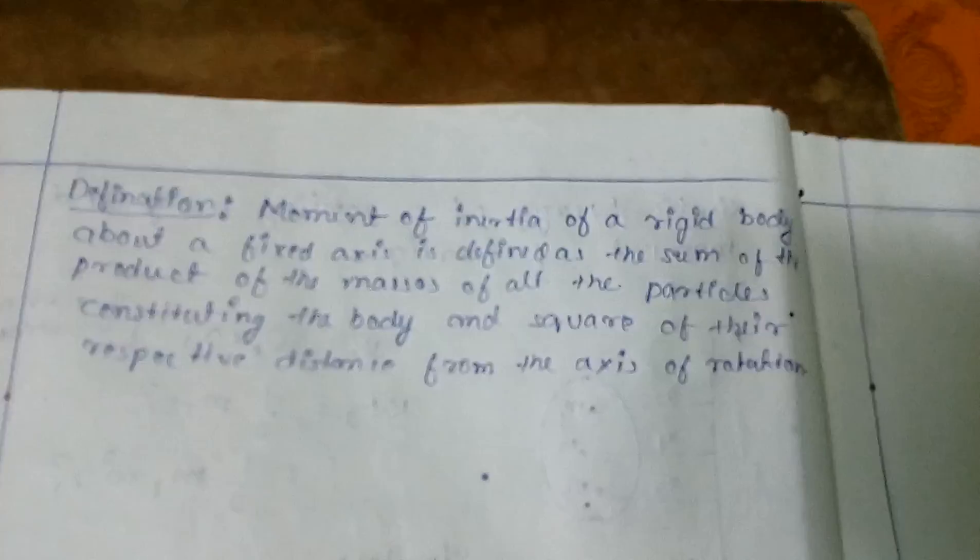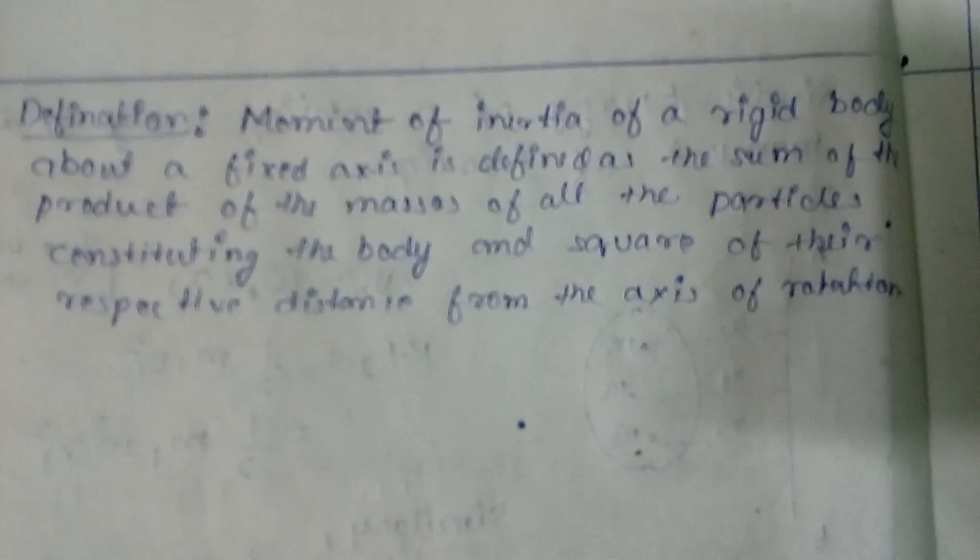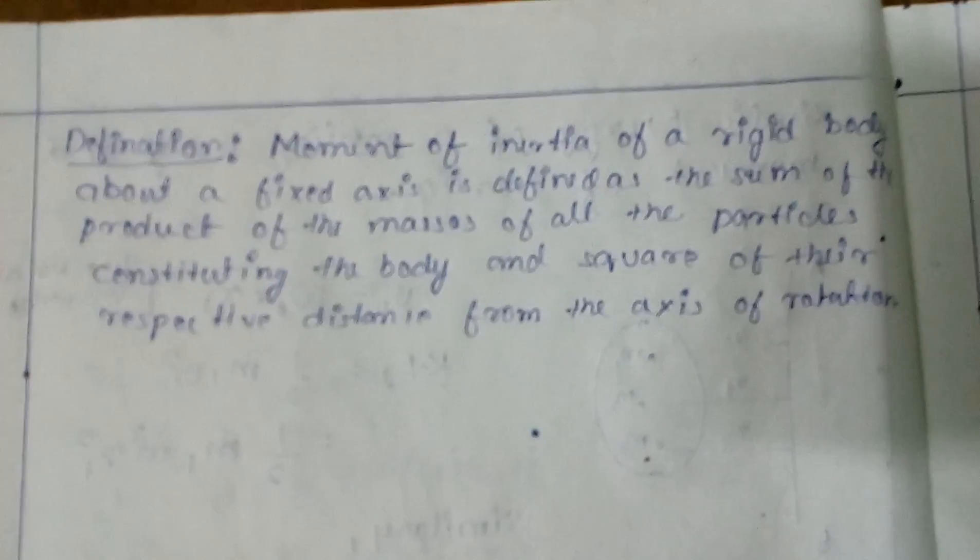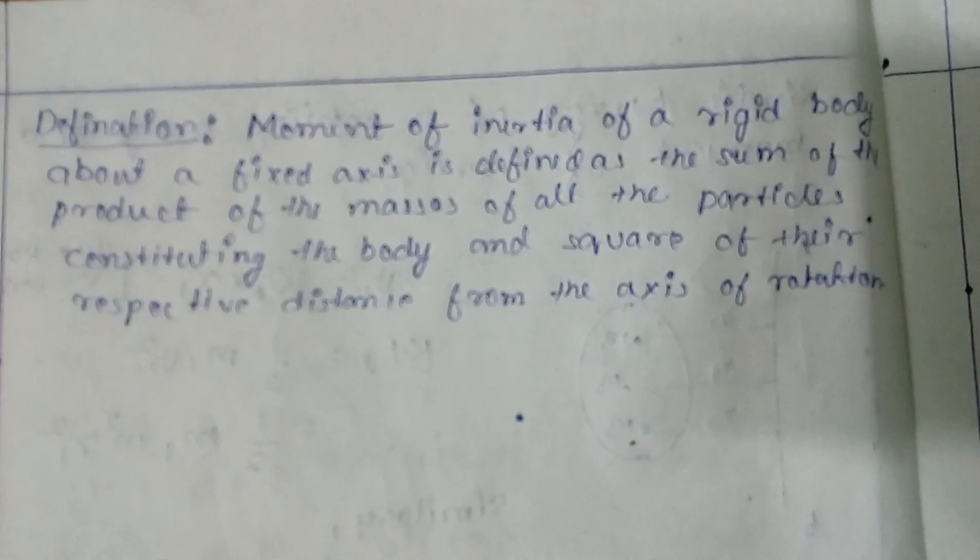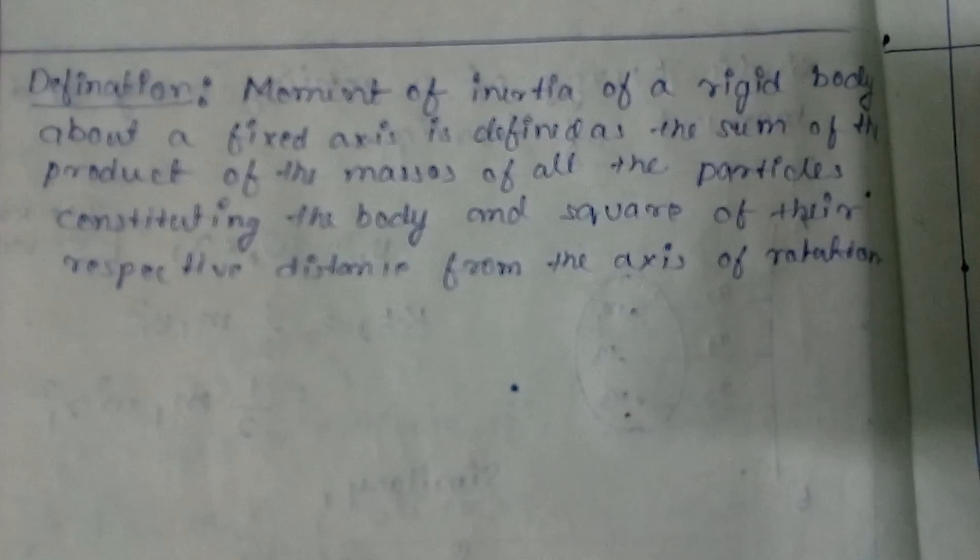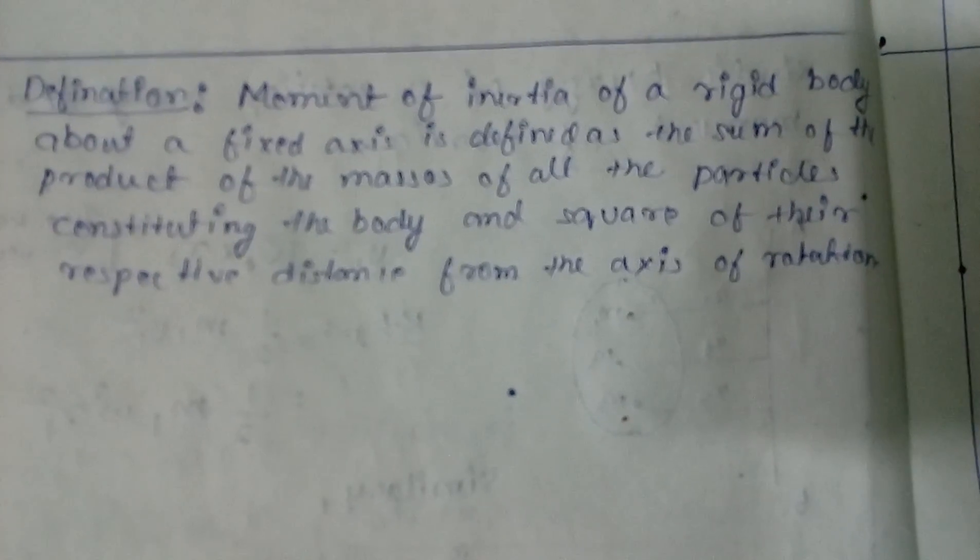So what is the definition? What's the exact definition of moment of inertia? Moment of inertia of a rigid body about a fixed axis is defined as the sum of the product of the masses of all the particles constituting the body and square of their respective distances from the axis of rotation.